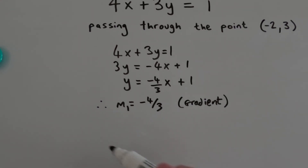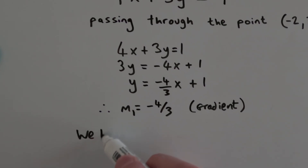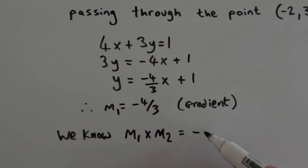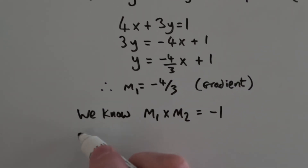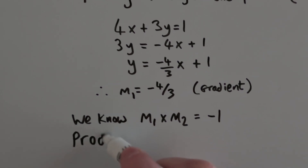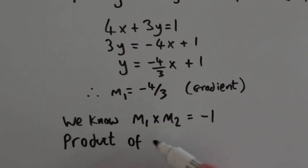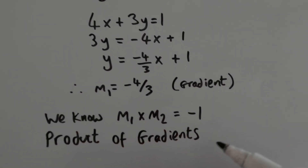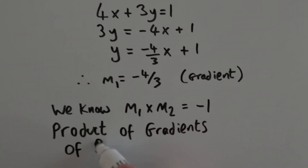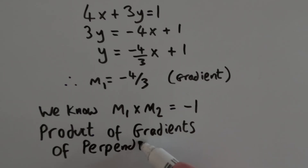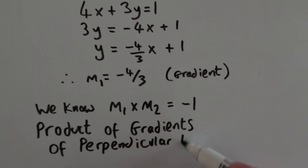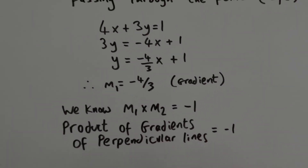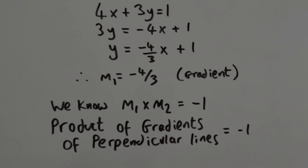We know that m1 times m2 equals minus 1. Why? Because of the basic principle: the product of the gradients of perpendicular lines equals minus 1. That's something you should be memorizing — it might or might not be given on a formula sheet.